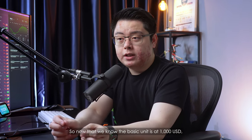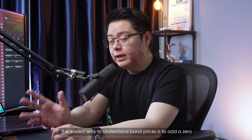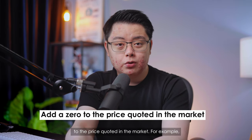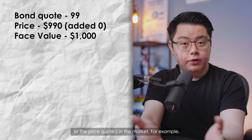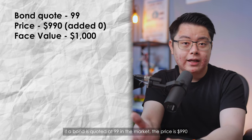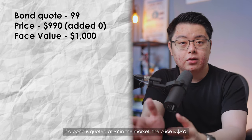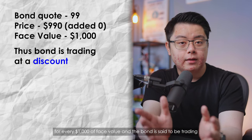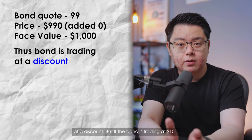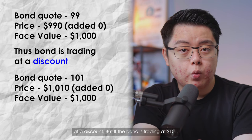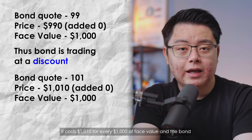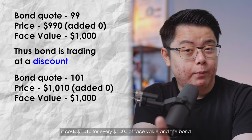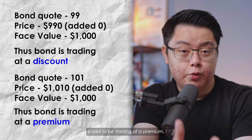The easiest way to understand bond prices is to add a zero to the price quoted in the market. For example, if a bond is quoted at $99 in the market, the price is $990 for every $1,000 of face value and the bond is said to be trading at a discount. But if the bond is trading at $101, it costs $1,010 for every $1,000 of face value and the bond is said to be trading at a premium.